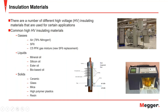When we talk about insulation materials, there are a number of different high voltage insulating materials. We have gases ranging from air, which is 78% nitrogen — very important when we talk about partial discharge — as well as SF6, C5 PFK gas mixture. Liquids include mineral oil, silicon oil, ester-based oil, and bio-based oil. Solids include ceramic glass, mica, high polymer plastics, and resin. Each material has its own permittivity and dielectric strength, making some more susceptible to PD activity with different characteristics.